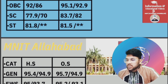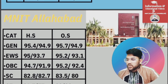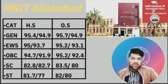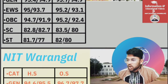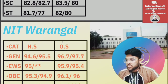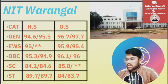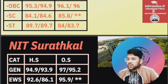For MNIT Allahabad: General 95.7, EWS 95.2, OBC 95.2, SC 83.5, ST 82 percentile. For NIT Warangal: General 96.7, EWS 95.9, OBC 96.1, SC 85.8, ST 84 percentile.